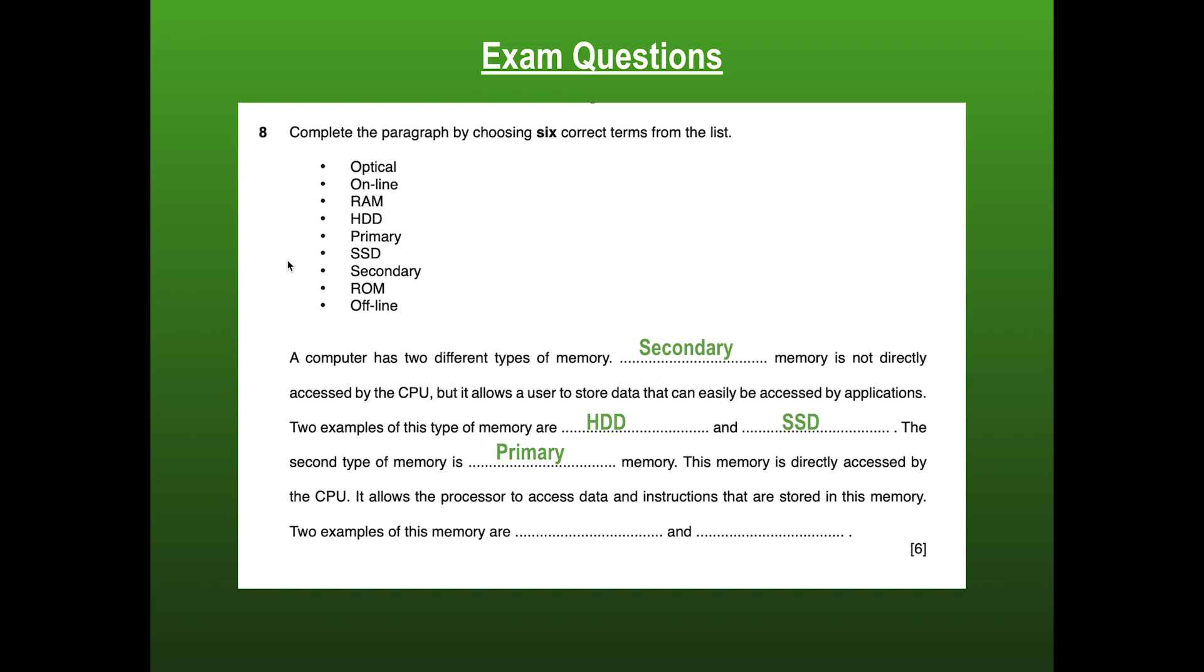So next it says it allows the processor to access data and instructions that are stored in this memory. Two examples of this memory are, well, we know four different examples. Our four examples are registers, cache, RAM, and ROM. Well, on our list, only RAM and ROM are available. And that's what we'll put into here now. And that's a successful question. Six full marks.